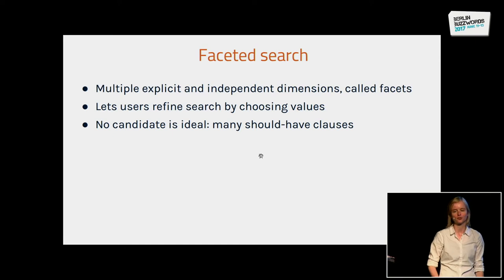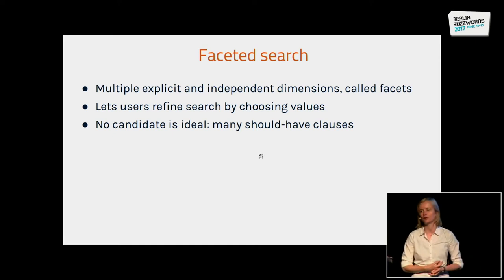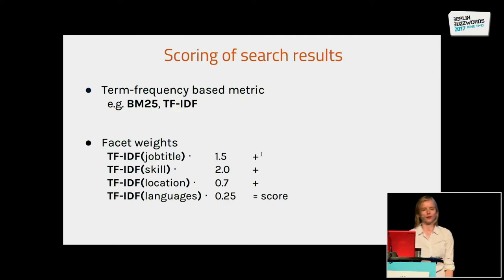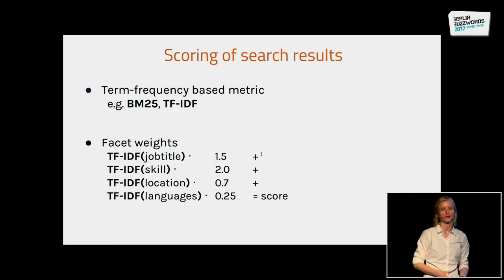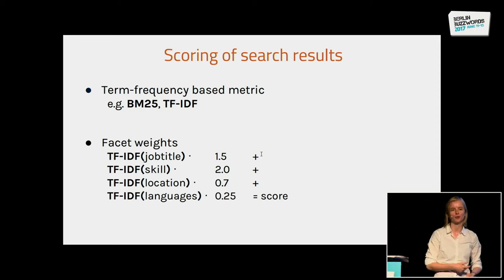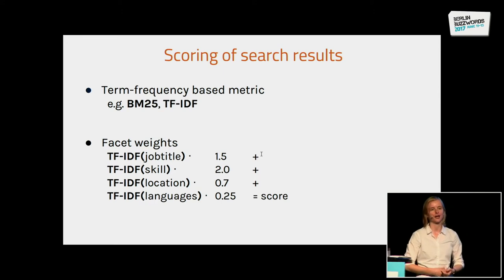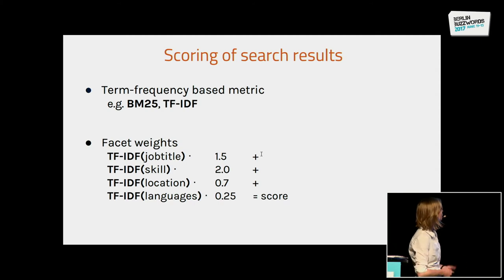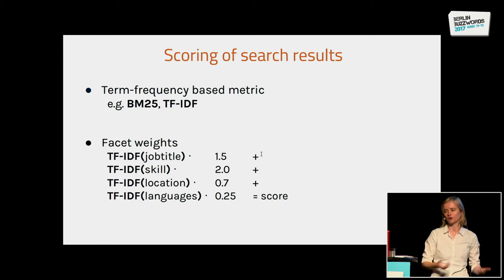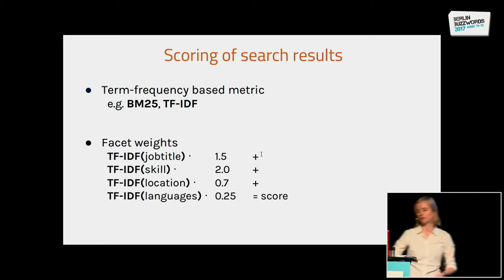In our system it's a bit different from e-commerce in the sense that we have many should-have classes, and it's not just a bunch of filters. Let's briefly go over how search results are normally scored. Usually you use some sort of term-frequency-based metric, like BM25 or TF-IDF. In case of faceted search, you also have a bunch of facet weights which you can multiply with the scores for each of these facets, so that you get a weighted score where some facets are considered more relevant than others.